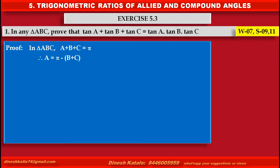By applying the tan ratio on both sides, we get tan A is equal to tan of (pi minus (B plus C)). Therefore, by using the formula tan(pi minus theta) is equal to minus tan theta, we get tan A is equal to minus tan(B plus C).